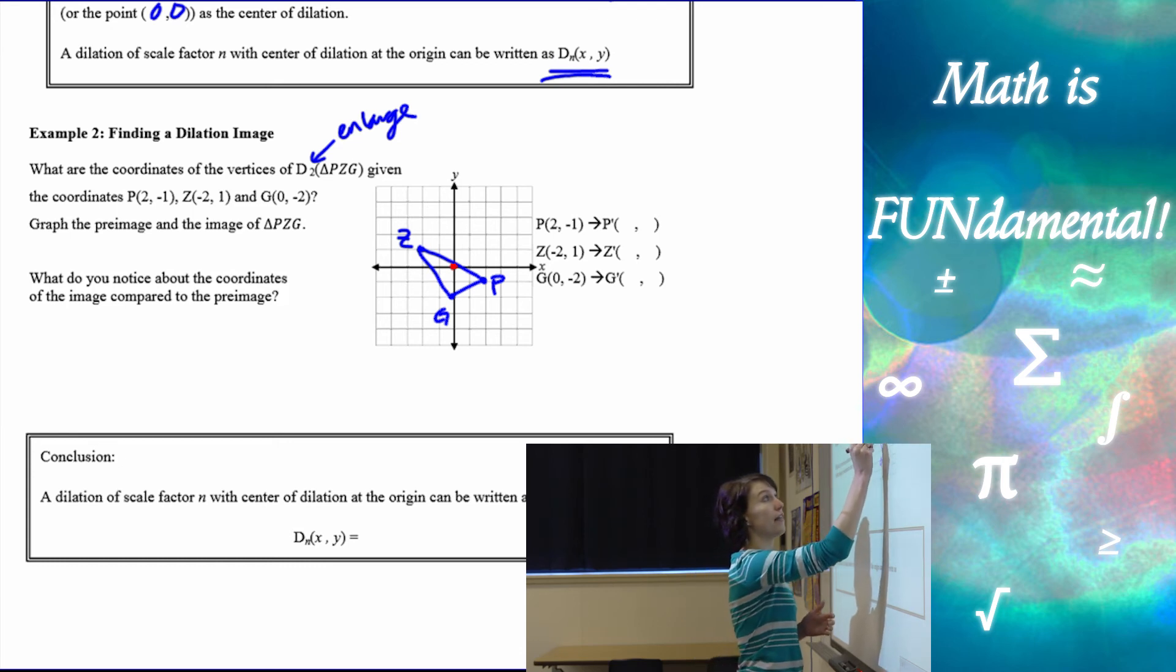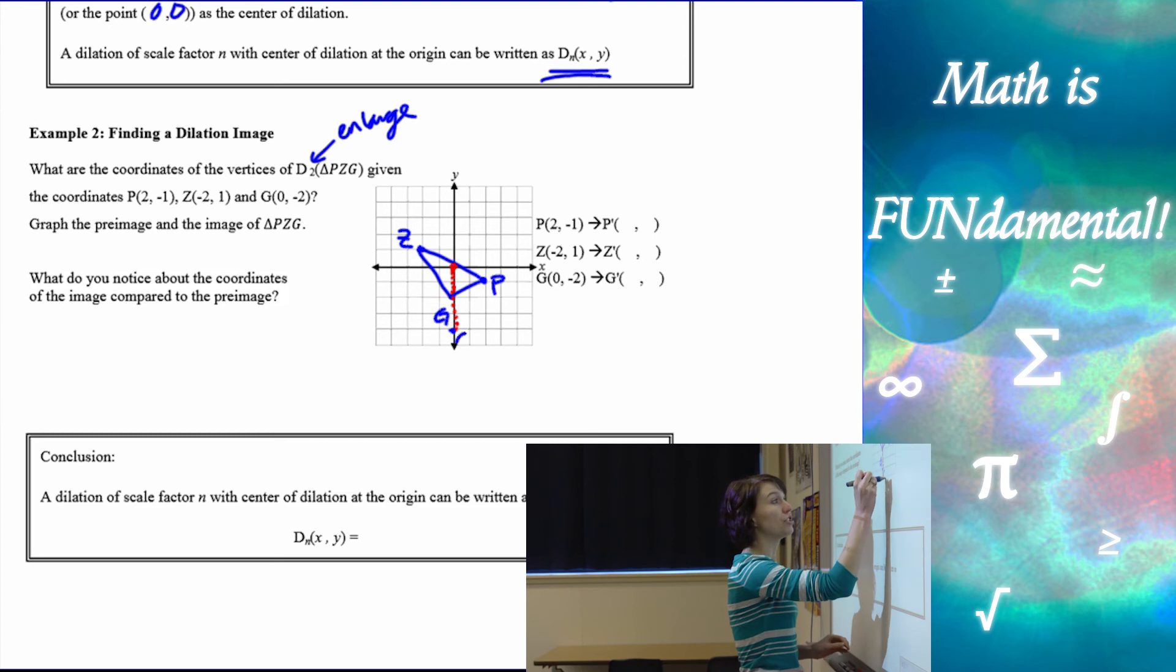So if my center is the origin, then the distance from the origin to G is going to double. So if that's 2, then I need to go to 4 for my G prime.